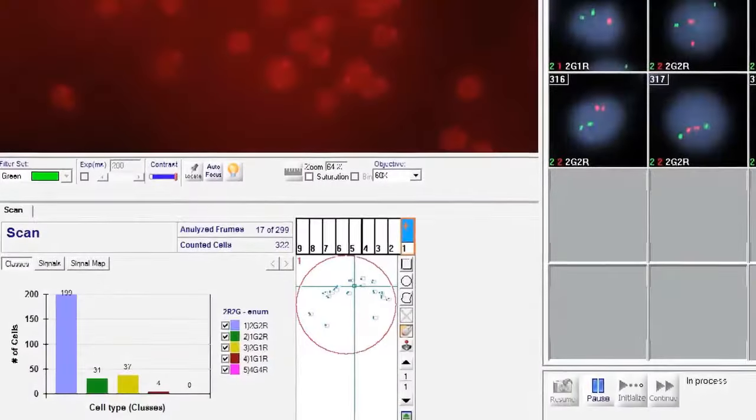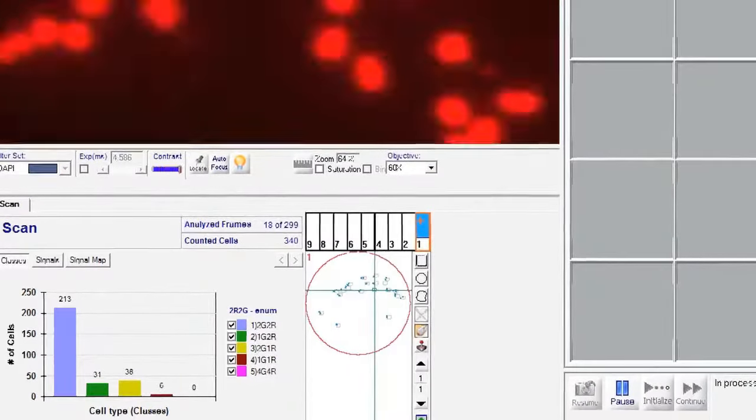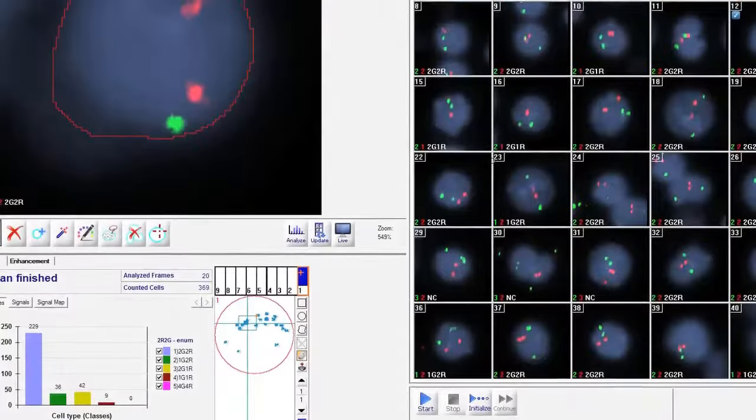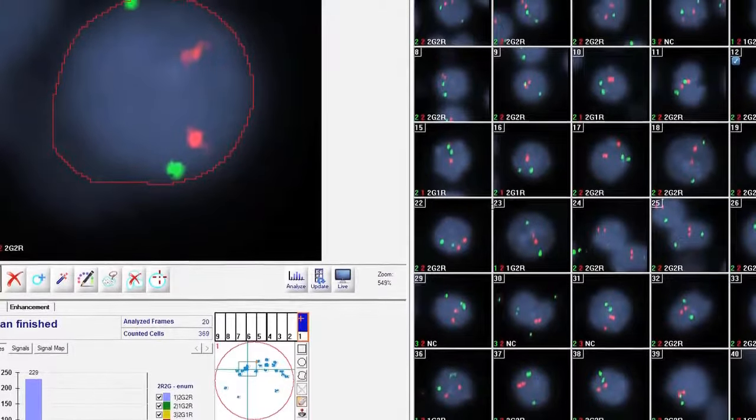Statistics are automatically updated and cells are displayed in an image gallery according to predefined class definitions. Unexpected aberrations are automatically identified for reliable and efficient review.